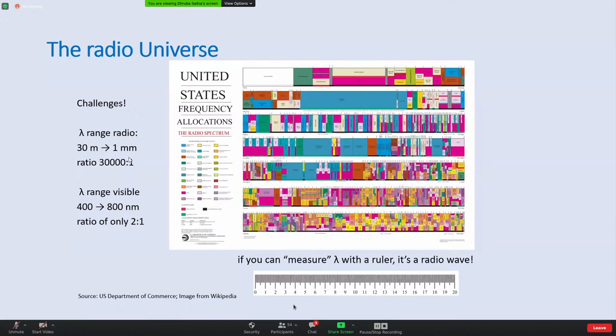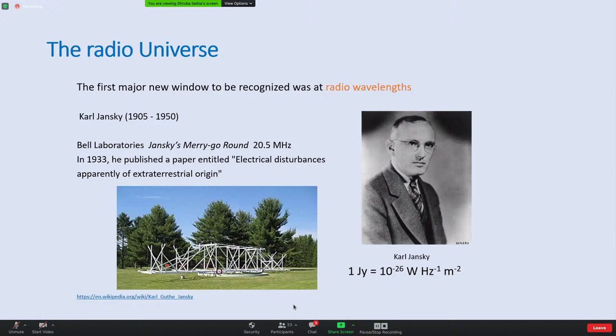A thumb rule for what constitutes a radio wave: if you can measure the wavelength with a ruler, it's a radio wave. It ranges from millimeters to meters - you can take your ruler and measure it - whereas optical wavelengths like 400 nanometers are not something you can measure with a ruler. Now, how did the radio window open up at all? The first major window outside the optical is the radio window, and this was opened due to the pioneering efforts of Karl Jansky.